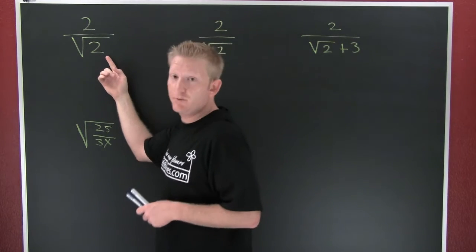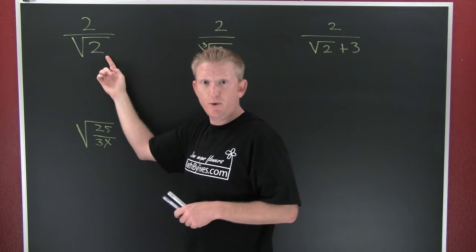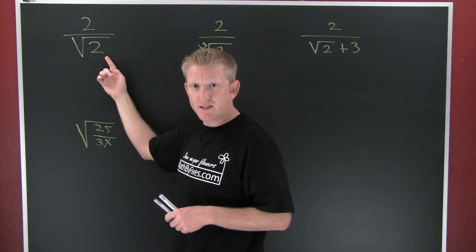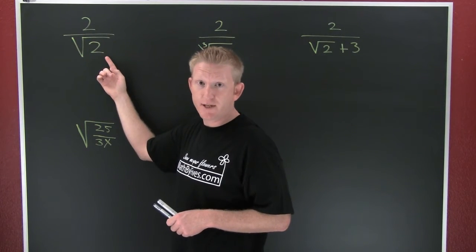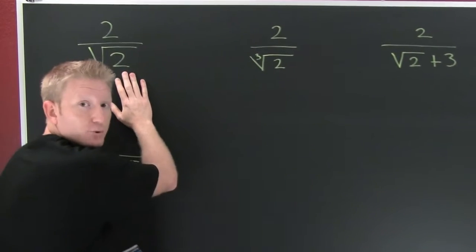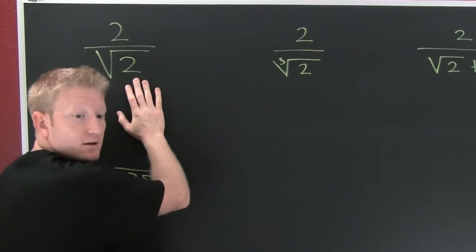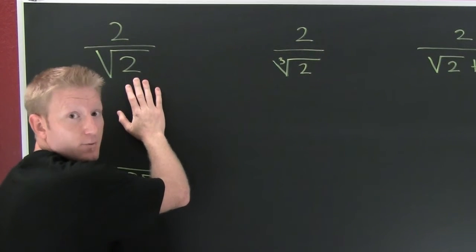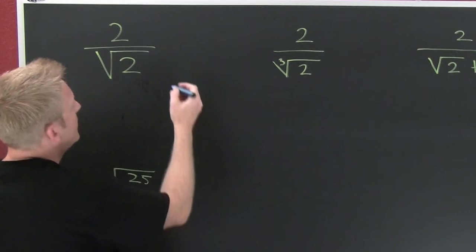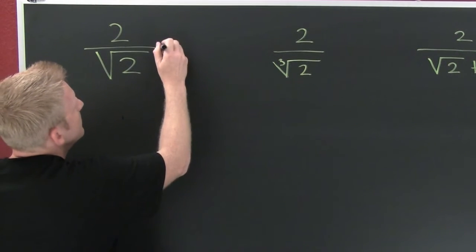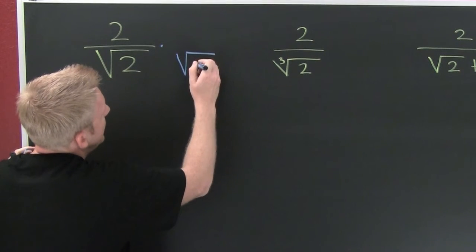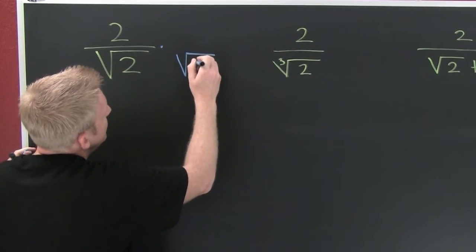Up here I see I have an irrational denominator, the square root of 2. What I want to do is I want to get it rational down there — that means chase all the roots out. What do I multiply the root of 2 by to get a rational number? Maybe let's go after 2. I'm going to multiply top and bottom by the square root of 2.